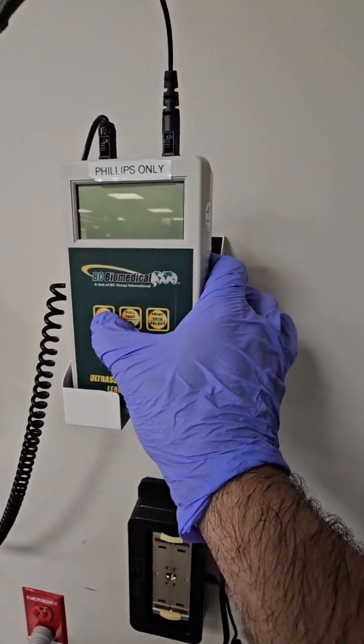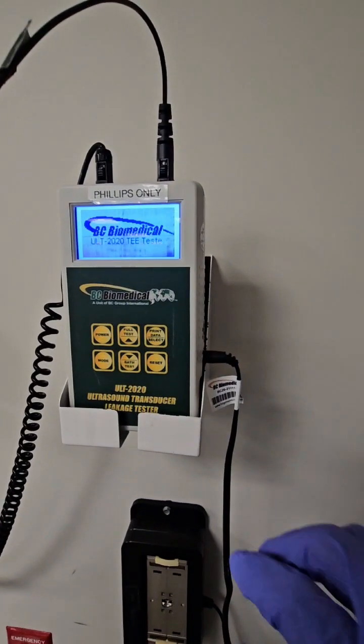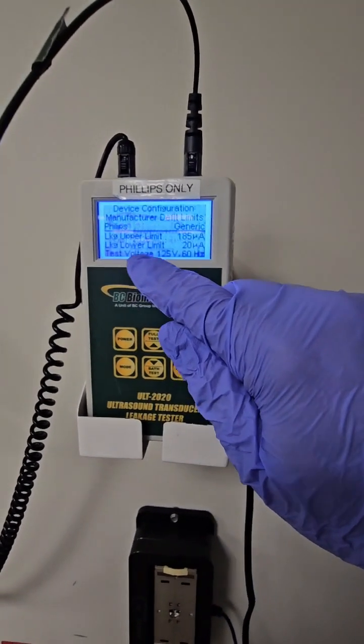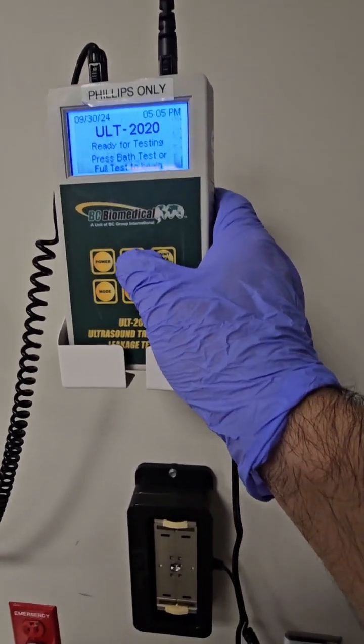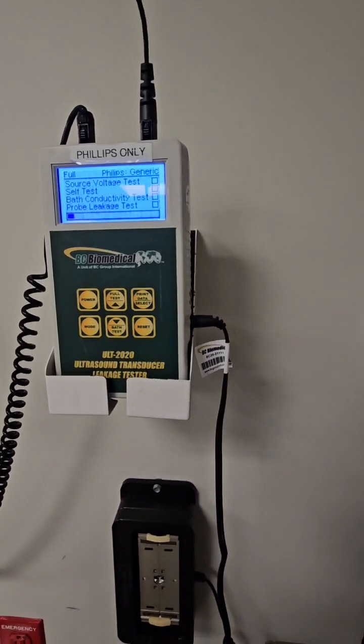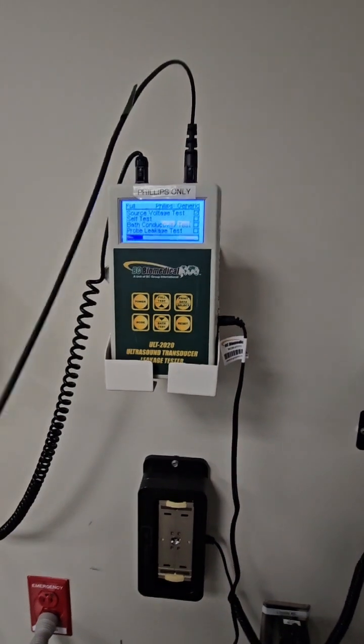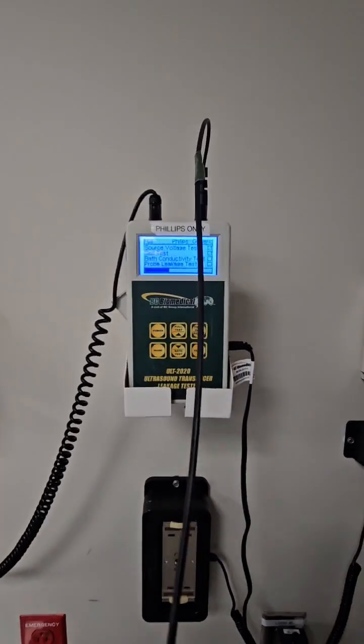You're going to insert, depending on which tester you use, your conductivity probe. You're going to turn the unit on and ensure that it is set for the manufacturer of the device, and then hit full test here.